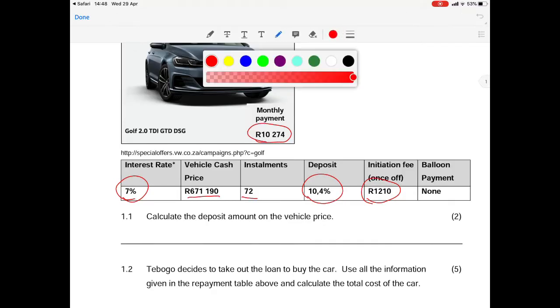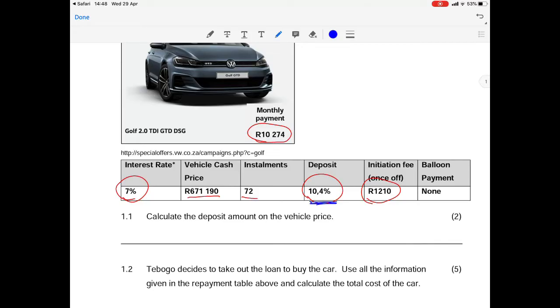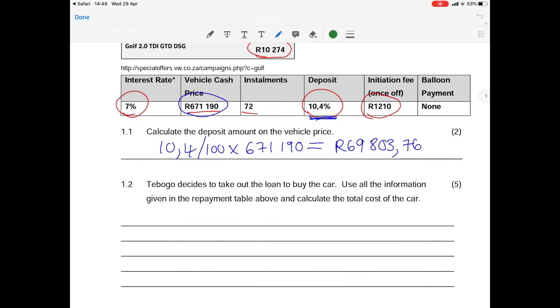Question 1.1 asks calculate the deposit amount on the vehicle price. Your deposit is 10.4% multiplied by your initial cash price of R671,190. So if you work that out you get a deposit of R69,803.76.